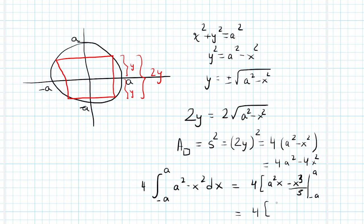Plug in x equals A. We have A cubed minus A cubed over 3. So it's that whole quantity. And then plug in negative A. You have negative A cubed plus A cubed over 3.